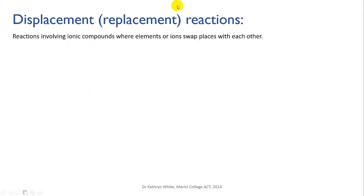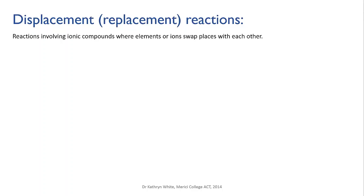The next type of reaction is called a displacement, or sometimes a replacement, reaction. There are two kinds: single and double displacements. These types of reactions involve ionic compounds and the key feature is that ions or atoms swap places with each other in the compounds.